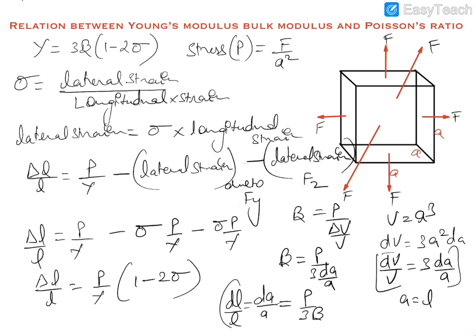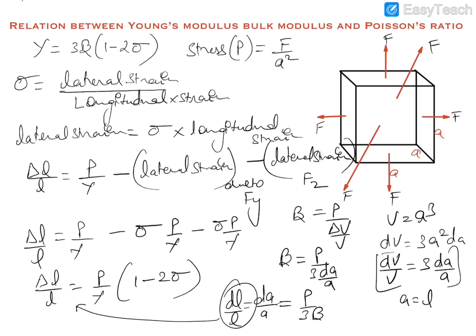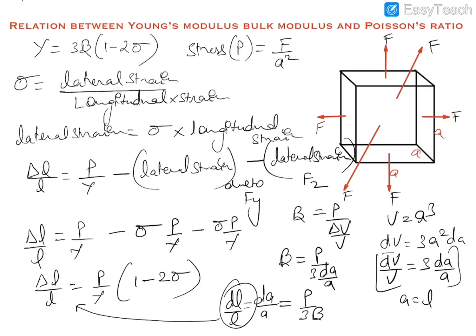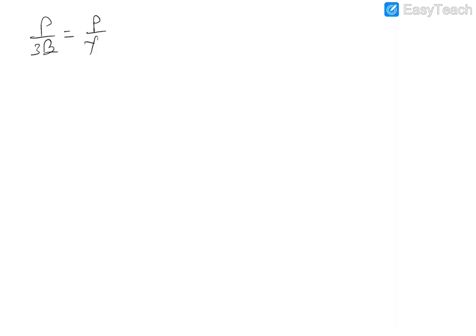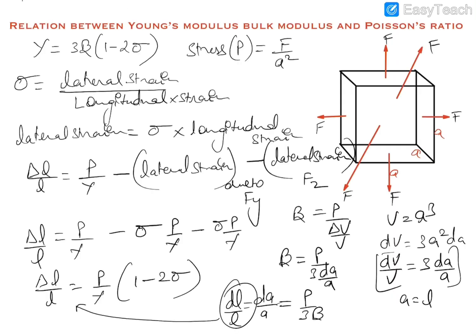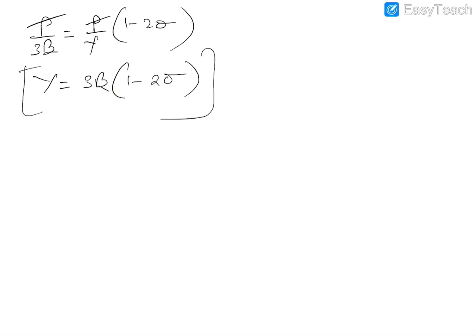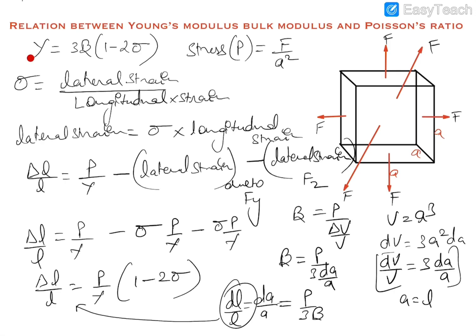Substituting this value, P upon 3 beta equals P upon gamma into 1 minus 2 sigma. Cancelling P from both sides gives gamma equals 3 beta into 1 minus 2 sigma. This is the final relationship between Young's modulus, bulk modulus, and Poisson's ratio.